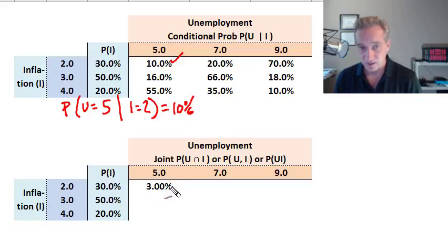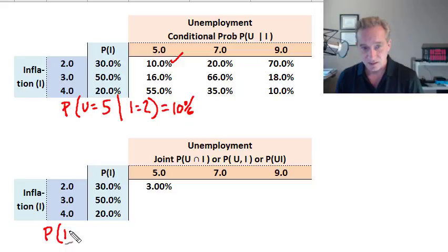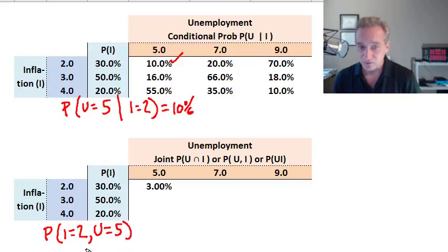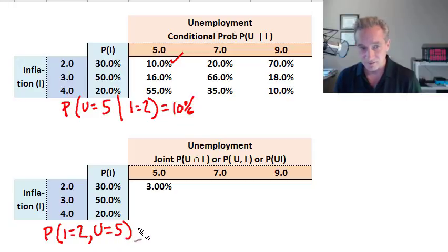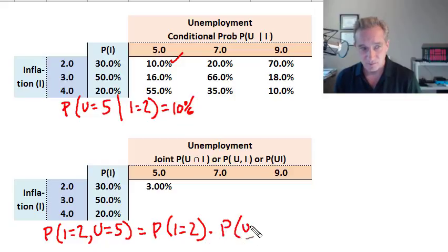Starting with the 3% cell: that's the joint probability that inflation equals two jointly with unemployment equaling five. You can write a joint probability using the comma notation, the intersection symbol, or by jamming the variables together. The joint probability that I equals two and U equals five is the product of the unconditional probability that inflation equals two, multiplied by the conditional probability that unemployment equals five given inflation equals two.